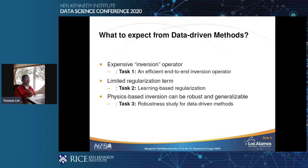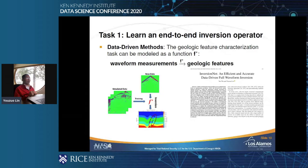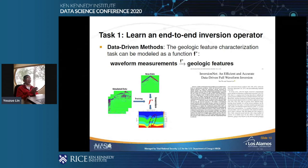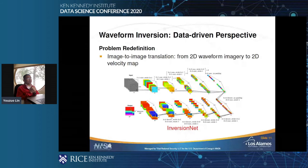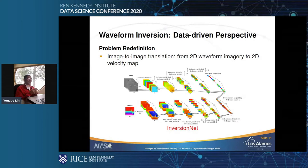One piece of work uses an end-to-end regression function. The idea is to learn a regression function directly mapping from the seismic data to the geologic features. We call it the InversionMap in our published paper. The fundamental idea uses an encoder-decoder structure mapping an original seismic image to the subsurface image — so it becomes image-to-image translation.